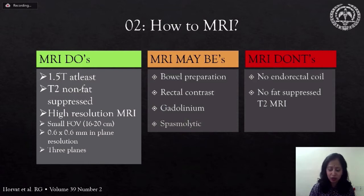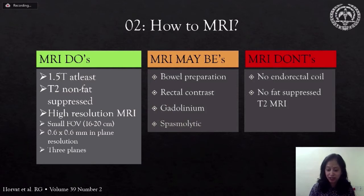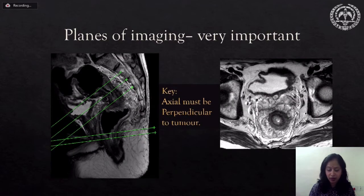What are the MRI don'ts? There is no need to use an endorectal coil. In fact, use of the endorectal coil can compress tissue and lead to overstaging, and it's also uncomfortable for the patient. No fat-suppressed T2-weighted MRI, because fat is actually a friend of the radiologist interpreting MRI and suppressing it will be detrimental. The right plane of imaging in rectal cancer is perpendicular to the rectal tumor.